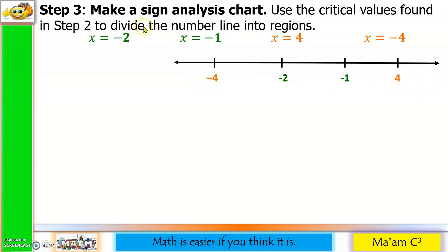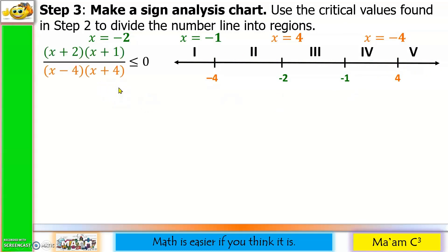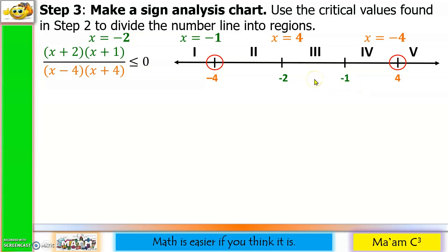The critical numbers divide the number line into regions: region 1, region 2, region 3, region 4, and region 5. Negative 4 and positive 4 came from the denominator, and since the denominator cannot equal 0 — otherwise the inequality is undefined — we use open circles for negative 4 and positive 4. Negative 2 and negative 1 came from the numerator, and since it's okay for the numerator to equal 0, we use shaded circles for negative 2 and negative 1.